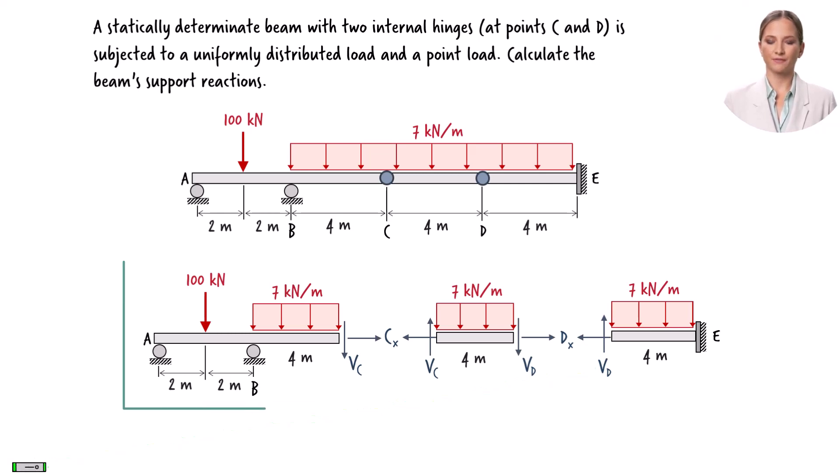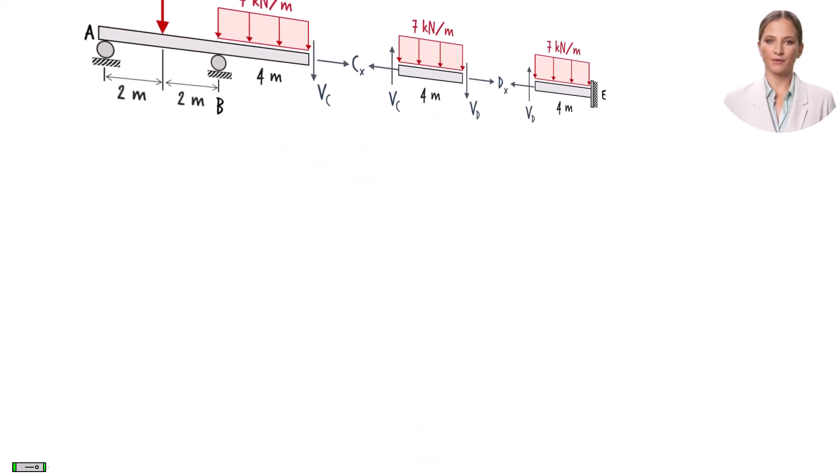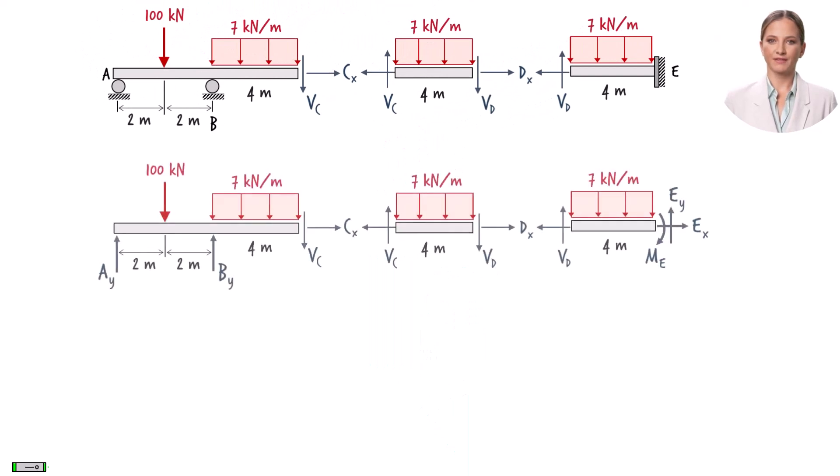This is a partial free body diagram of the beam. To complete the diagram, we need to show the support reaction forces. The roller support at point A has one vertical reaction force.